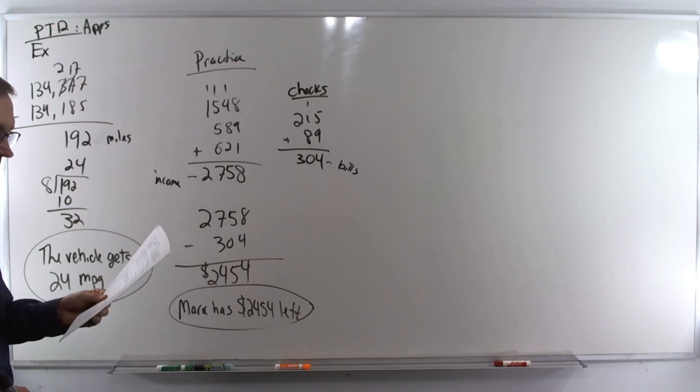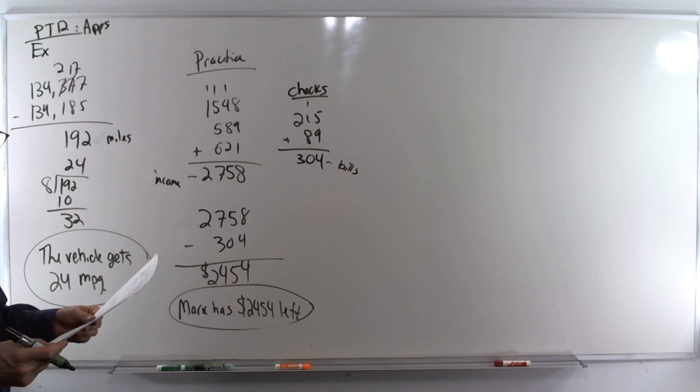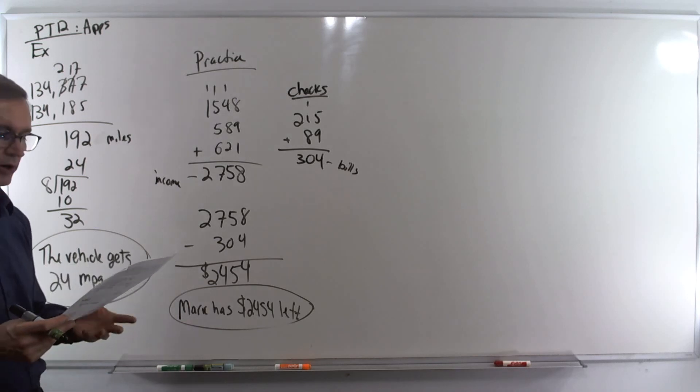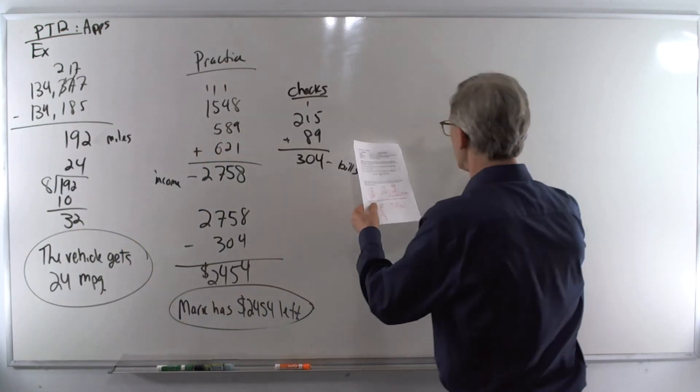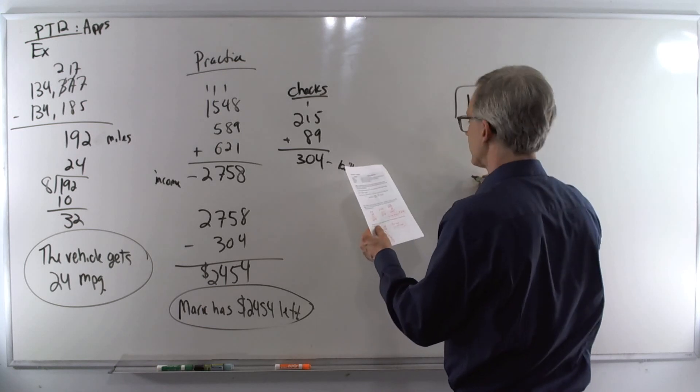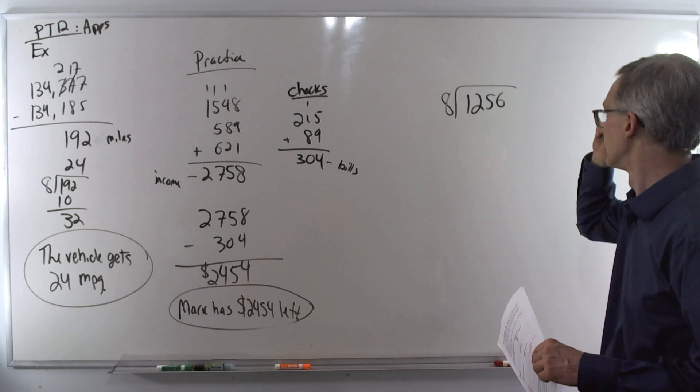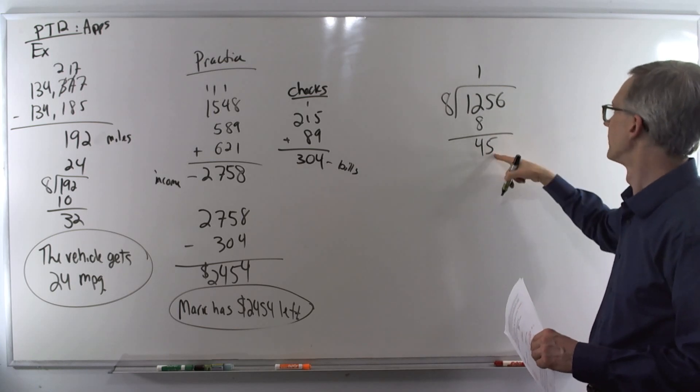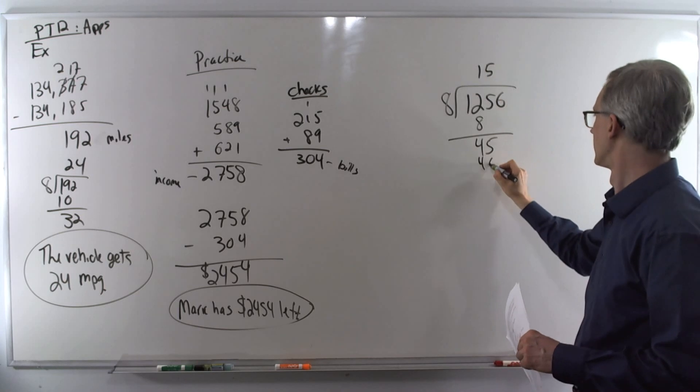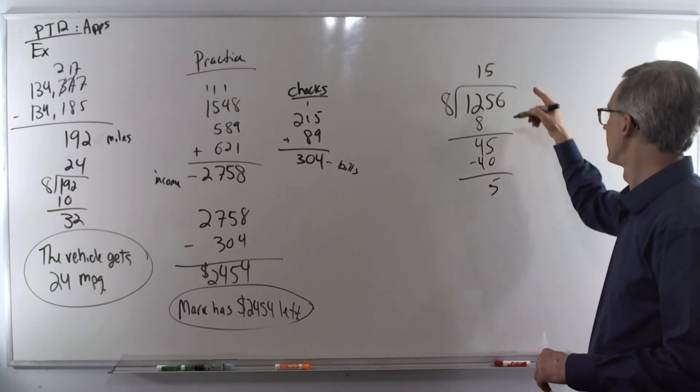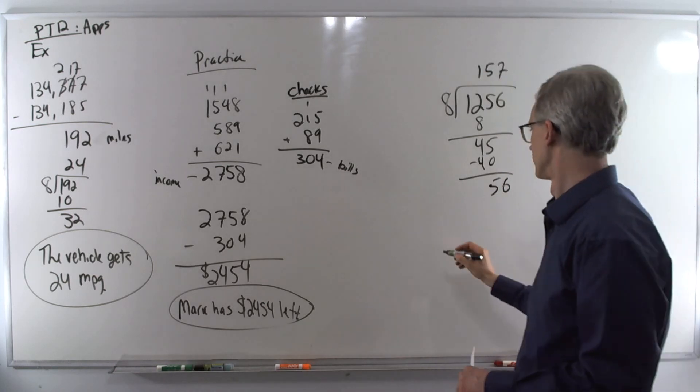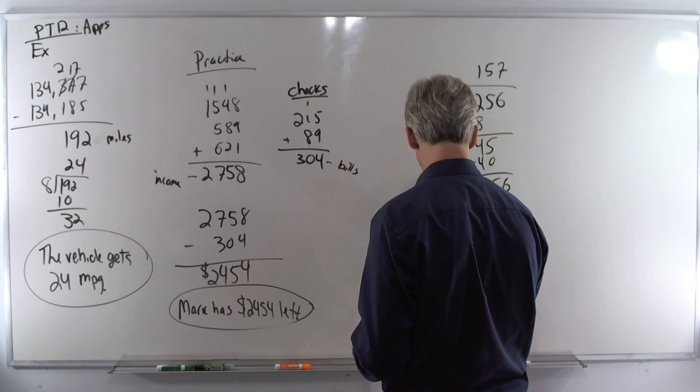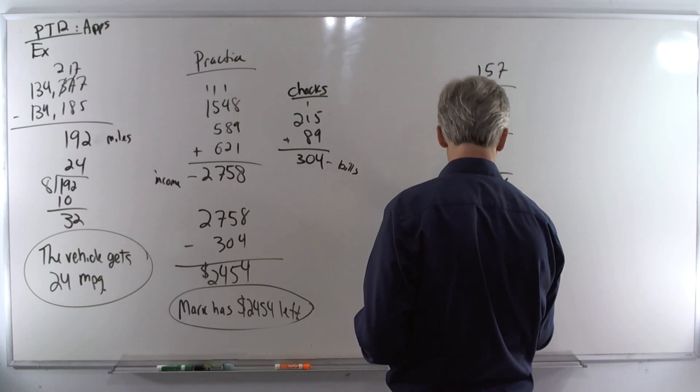Next up. A developer is creating 8 equally sized parcels of land on a plot with an area of 1,256 acres. How many acres are in each parcel? They are equally sized. So, since we're splitting a whole of 1,256 acres into 8 equally sized pieces, we can divide. 8 goes into 12 once. Subtract to get a 4. Bring down the 5. 8 will go into 45 five times. Multiply to get 40. Subtract to get a 5. Bring down the 6. Finally, 8 times 7 is 56. So, each parcel is 157 acres.